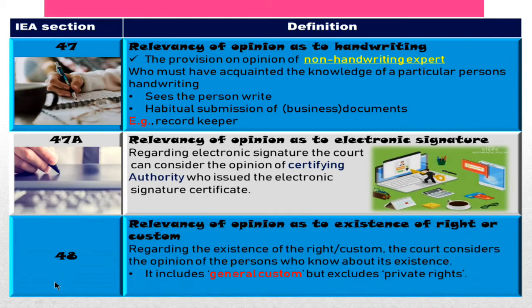Section 48 IEA is about the relevancy of opinion as to the existence of a right or custom. A person who has good knowledge of the existence of a right can give an opinion, and that right should usually be a general or public right — not something private, like a contract or agreement between two persons, which is not considered.